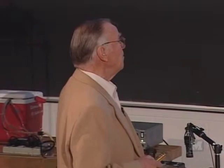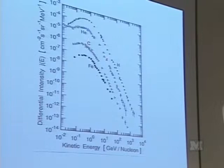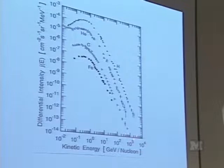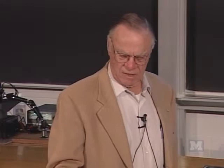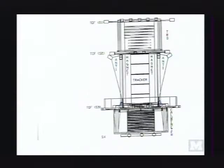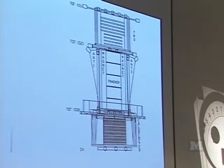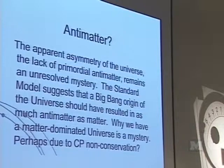These are the energies per nucleon of iron, carbon, helium, and hydrogen in cosmic rays up to a few billion electron volts per nucleon. Here is an Italian satellite-borne detector launched last year. It features a magnet so that particle momentum can be determined by tracking the particle through the magnet, with detectors above and a calorimeter to measure the total energy of a hadronic particle or nucleus below.